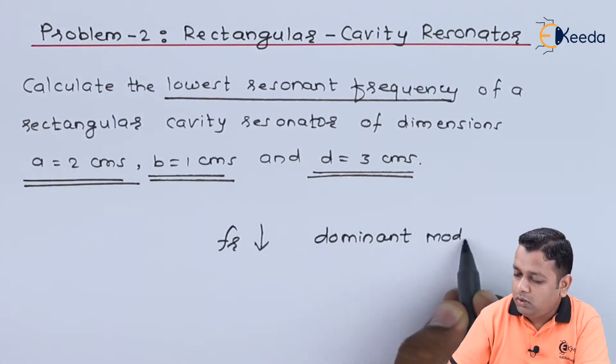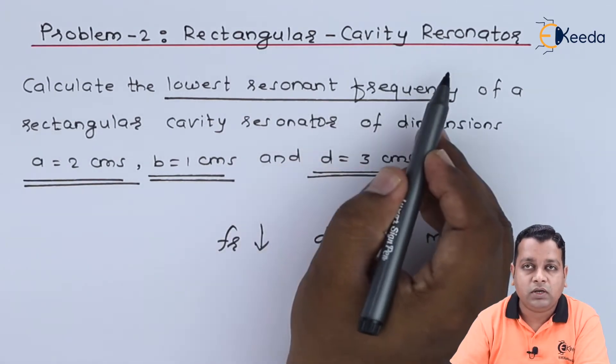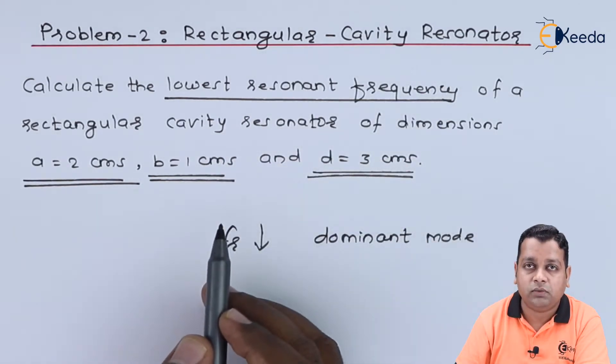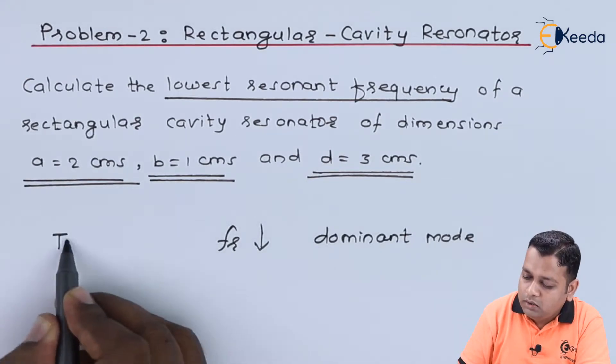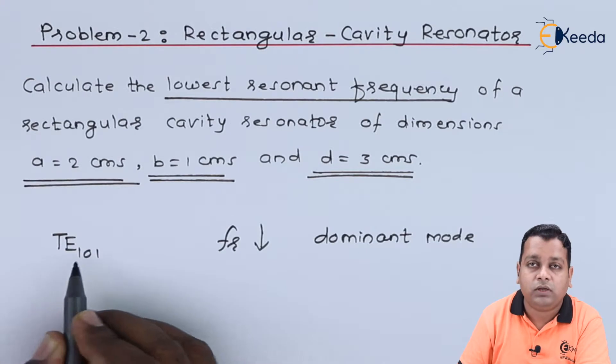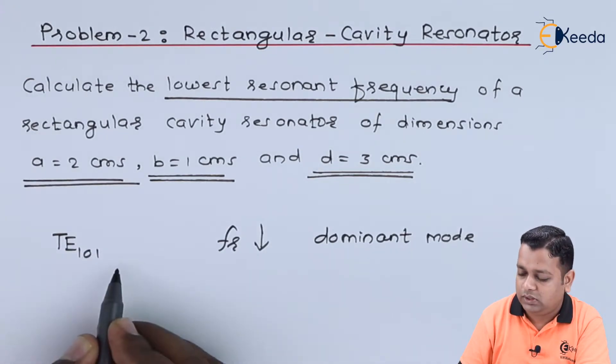For the rectangular cavity resonator, we know that the dominant mode of operation is possible for the combination of transverse electric having 1-0-1 configuration.